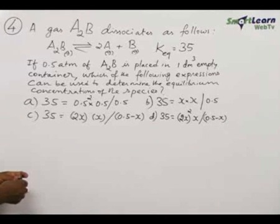Problem number 4, the gas A₂B dissociates as follows: A₂B gives 2A plus B. For this equilibrium, the equilibrium constant is arrived as 35.